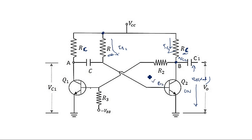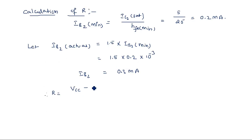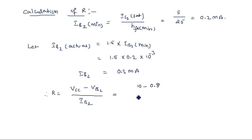Therefore, R = (VCC − VB2) / IB2. Since the transistor is in on state, VB2 = VBE sat = 0.8 volts. So R = (10 − 0.8) / 0.3 milliamperes = 30.667 kilo ohms.